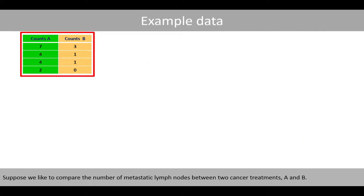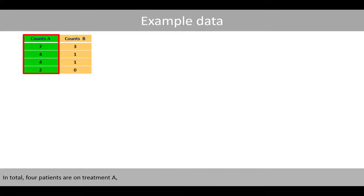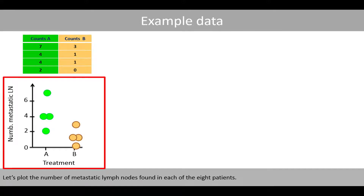The number of metastatic lymph nodes is an important prognostic factor as it is associated with the progression of the cancer disease. Suppose we like to compare the number of metastatic lymph nodes between two cancer treatments, A and B. For the purpose of this video, I will only use a very small dataset. In total, four patients are on treatment A, whereas four patients are on treatment B. Let's plot the number of metastatic lymph nodes found in each of the eight patients.